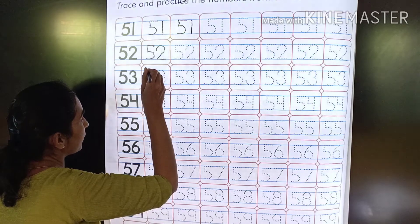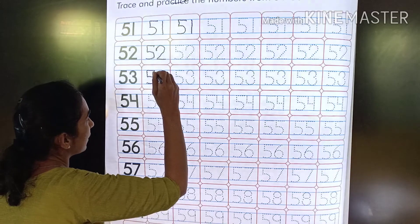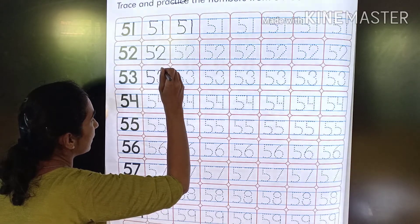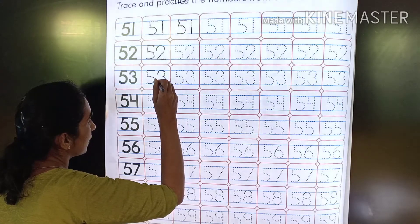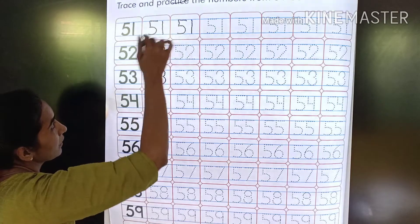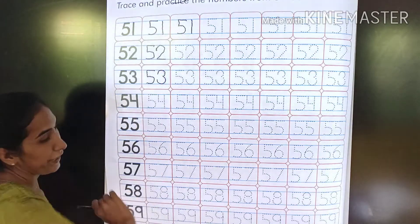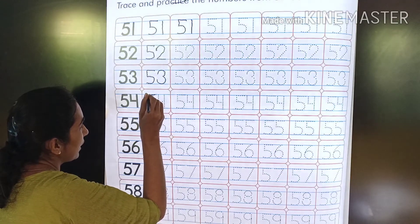Now 53. See, all the numbers are on the same line. Not one small and one big. All should be on the same line.